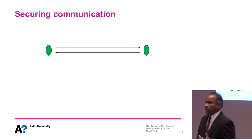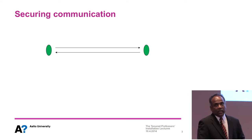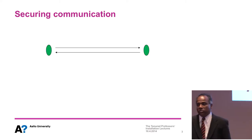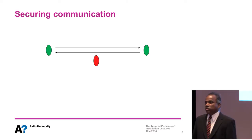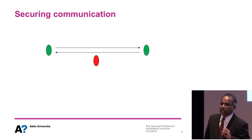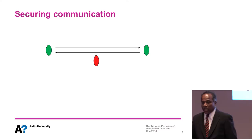Like many researchers in information security, I got my start looking at the security problems in communication. Typically there are two parties — the blobs in green — and two parties want to communicate but need to do so in the presence of a bad guy. Security researchers call this bad guy an adversary. The goal of secure communication is how can these two legitimate parties communicate even though there is an adversary present. The adversary model is typically called the Dolev-Yao model, which assumes the adversary has full control over the network.